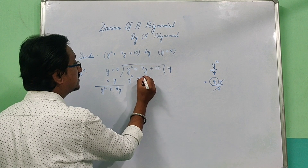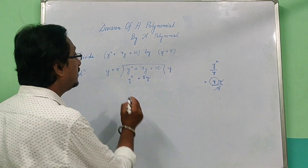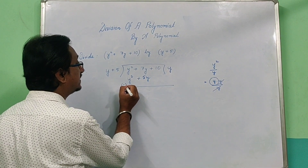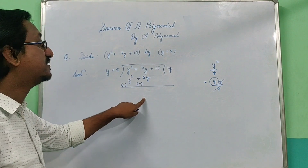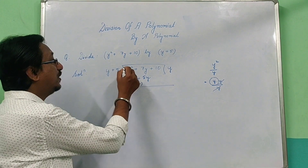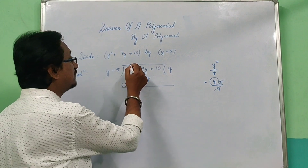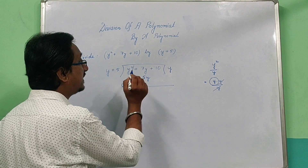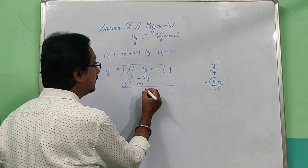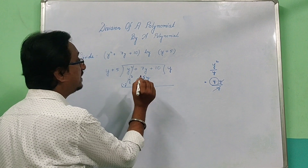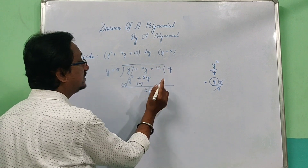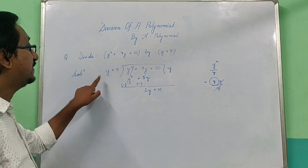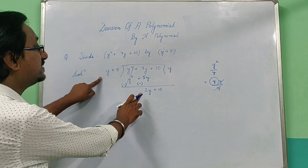We write y² plus 5y and we do step one: divide, then subtraction. We change the signs. So y² minus y² equals 0 and cancels. Here plus minus minus gives us 2y. Then we bring down the next term plus 10.